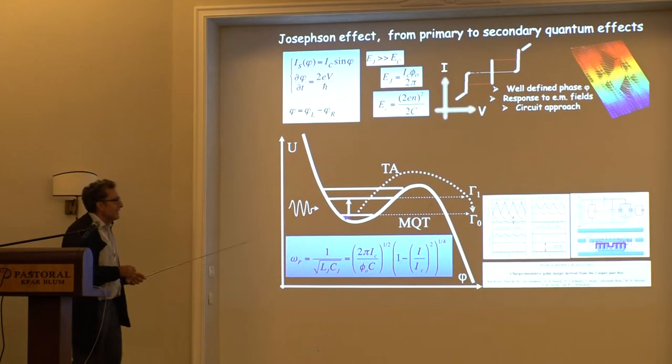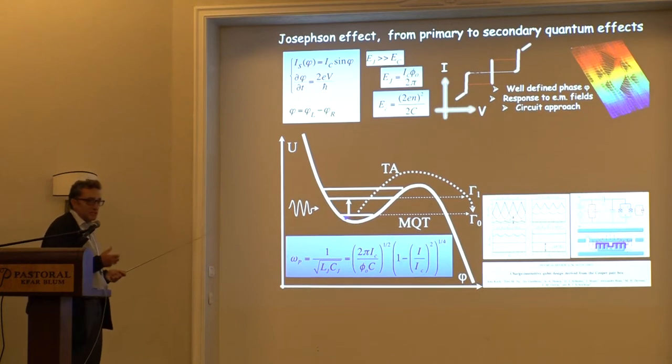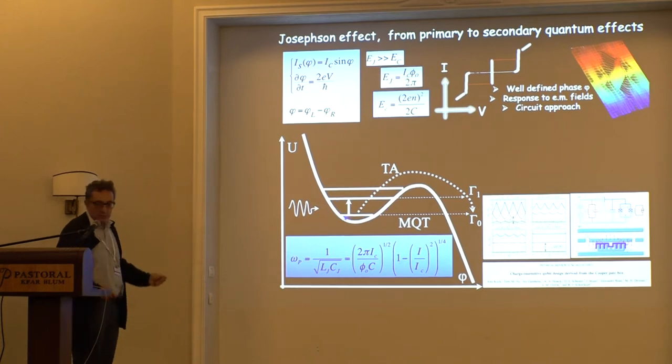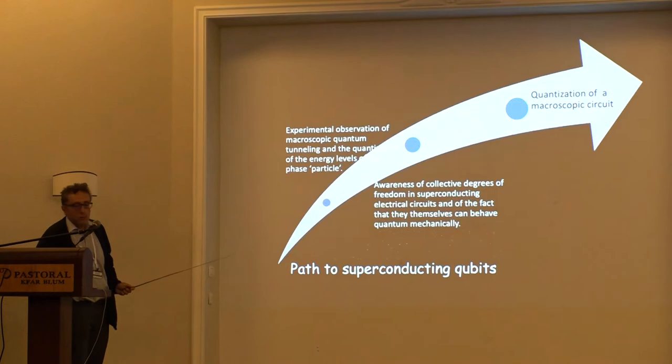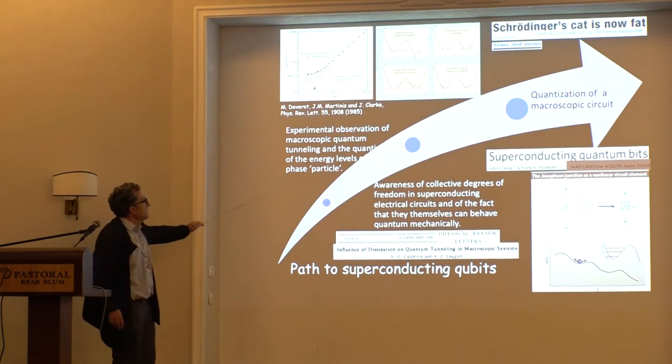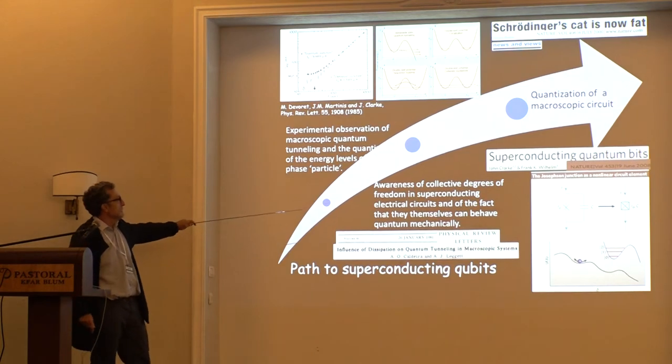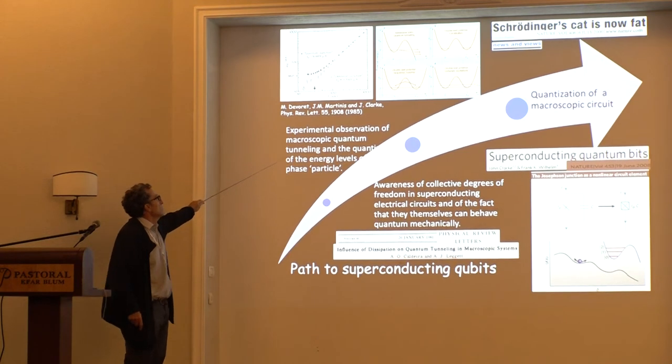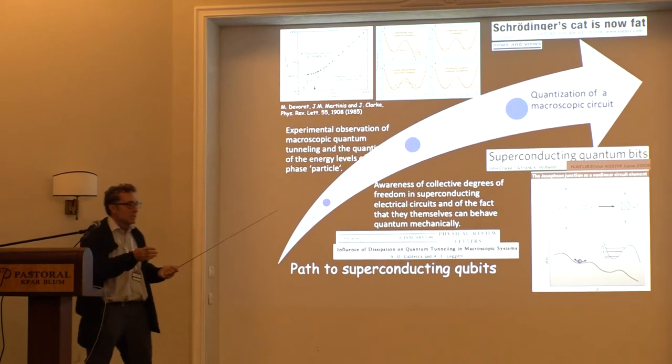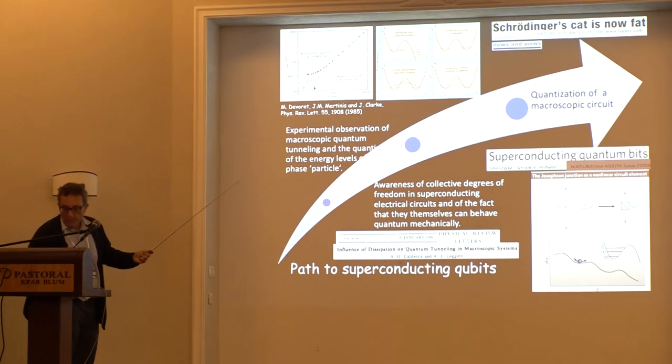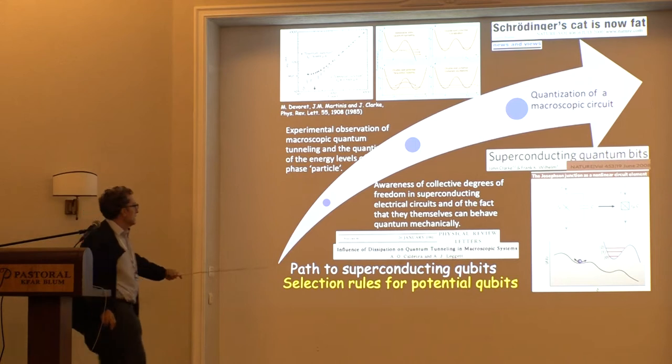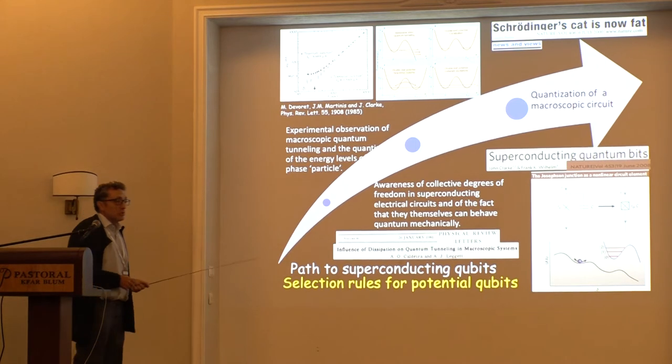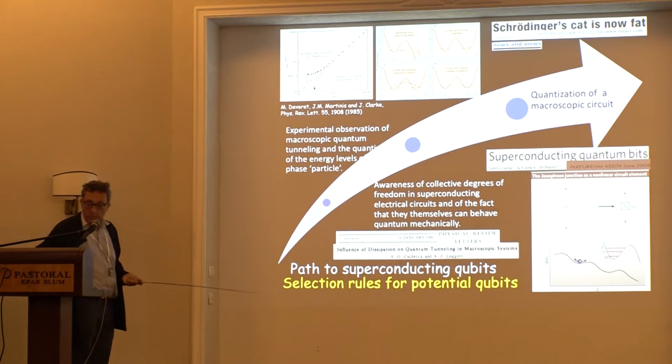Obviously, the transmon is this advanced understanding of how all our energies work to build some kind of protected circuit and to find the right spot where to operate. We know the three key points: awareness of collective degrees of freedom, experimental observation of macroscopic quantum tunneling, and quantization of the macroscopic circuit. These are somehow the selection rules to understand potential qubits with other materials, layouts, and whatever.